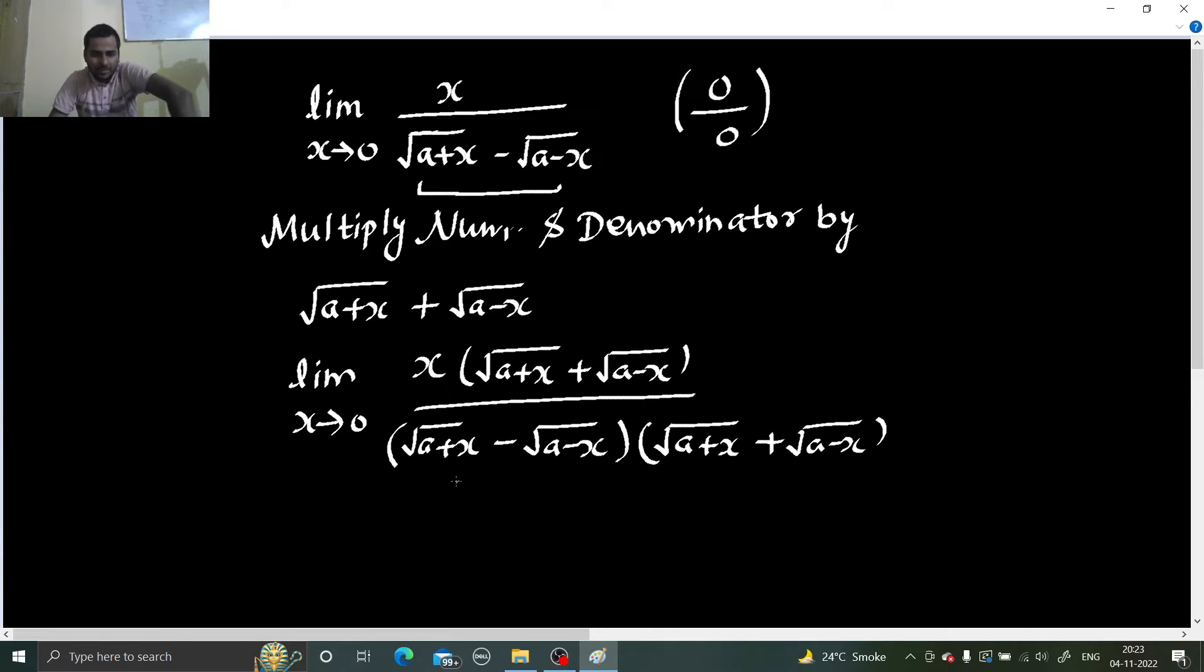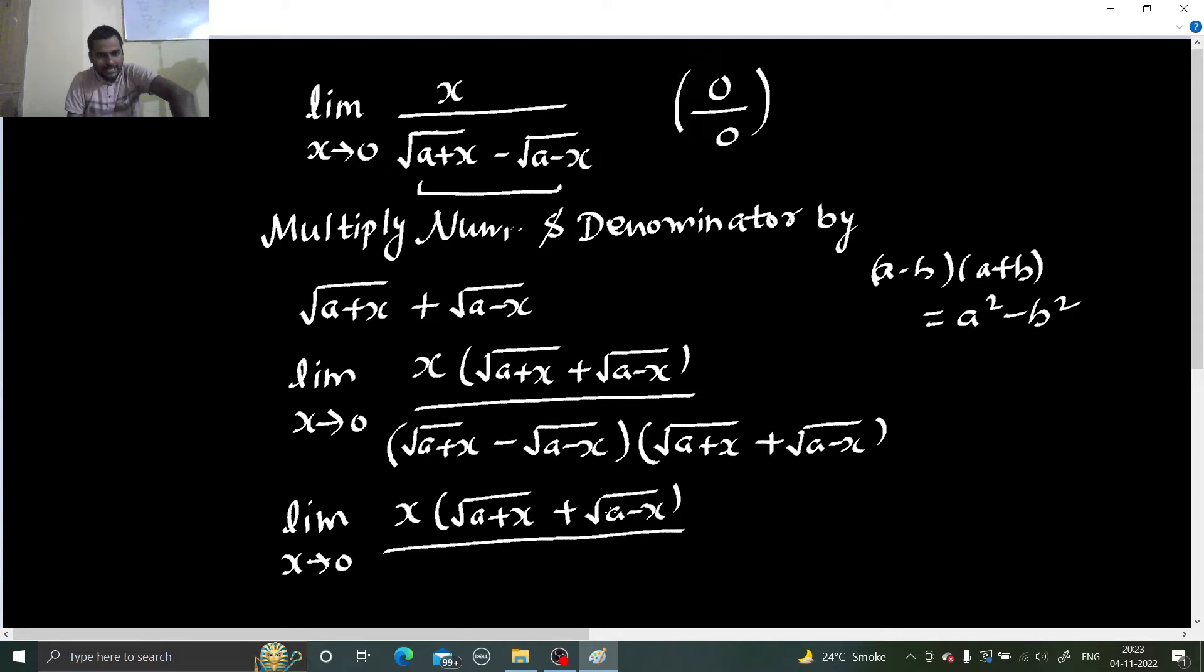So as you can see in denominator a minus b a plus b. So you know a minus b, a plus b is nothing but a square minus b square. So we are not going to touch numerator portion right now. Coming to denominator first, so leave the numerator as it is. And in denominator under root a plus x whole square will give you a plus x minus sign in the middle and under root a minus x whole square will give you a minus x.